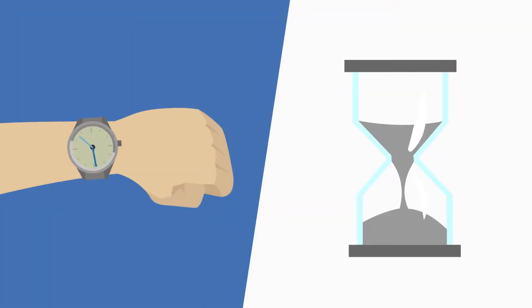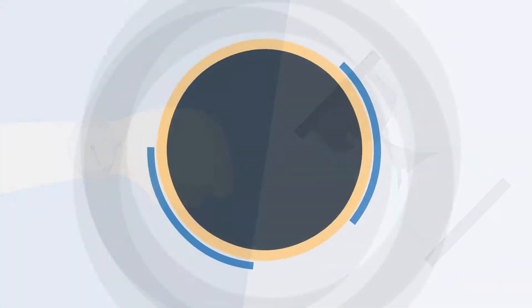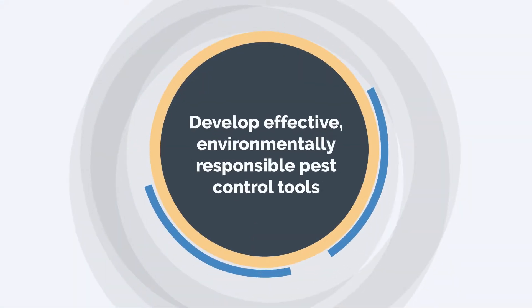Dow-Elenko became Dow AgroSciences, now Corteva AgroScience. The name has changed over the years, but our commitment to developing effective, environmentally responsible pest control tools continues stronger than ever.